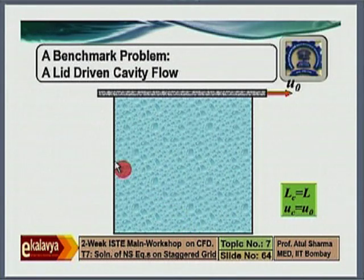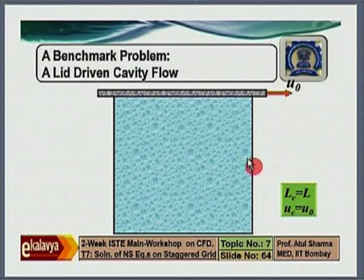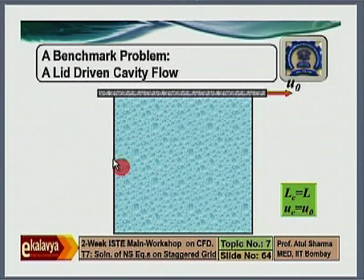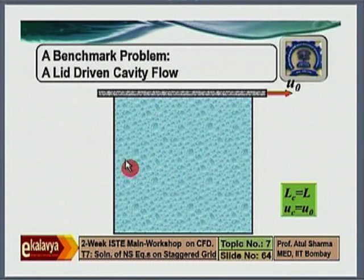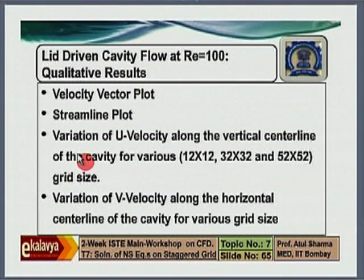Similarly, looking at the variation of v velocity on the horizontal center line — when you have a clockwise vortex, near the left wall the direction of v velocity will be upward, and near the right wall the direction will be downward. So there is a change in v velocity as you move from left to right on the horizontal center line. Other than these plots, we generate data from our in-house code developed through the formulation, implementation detail, and solution algorithm discussed here, and compare our result with the published result.